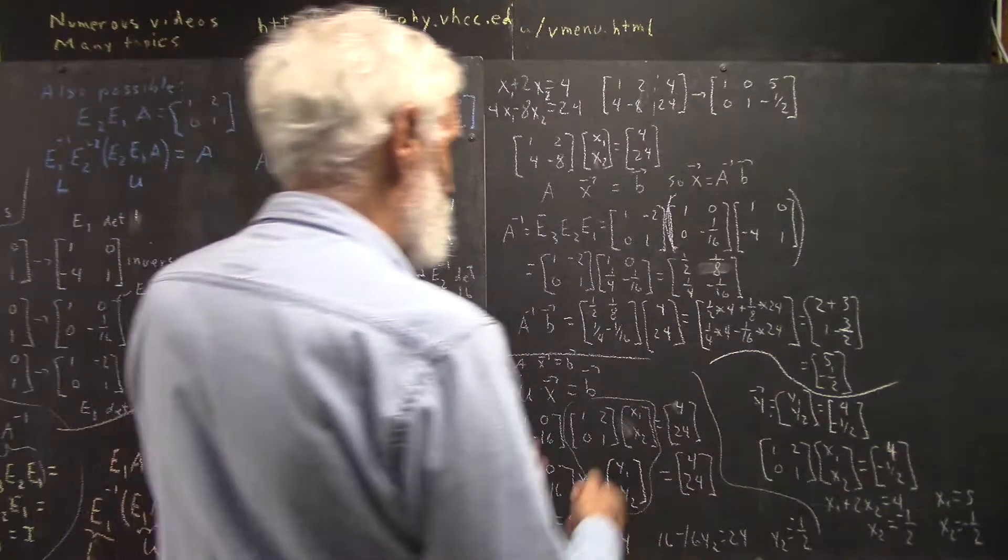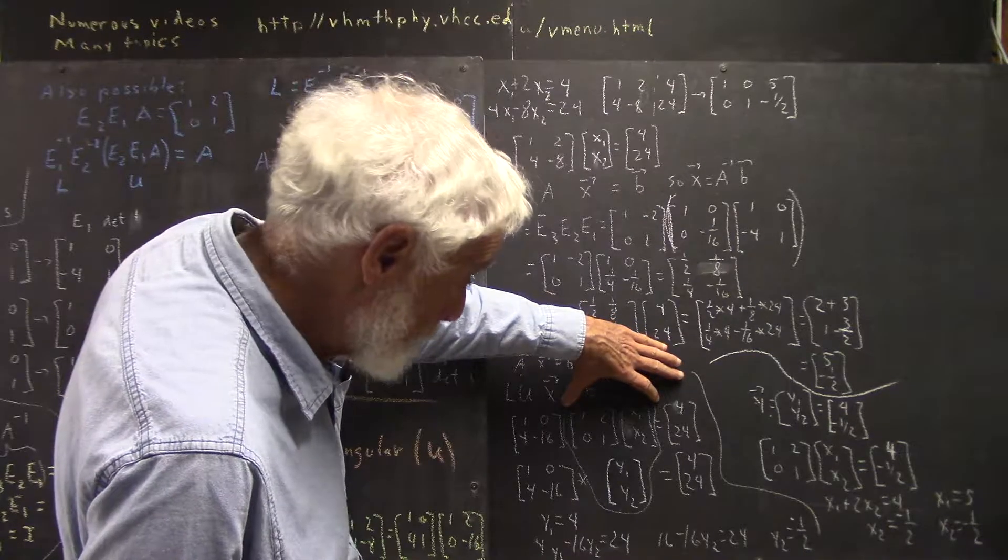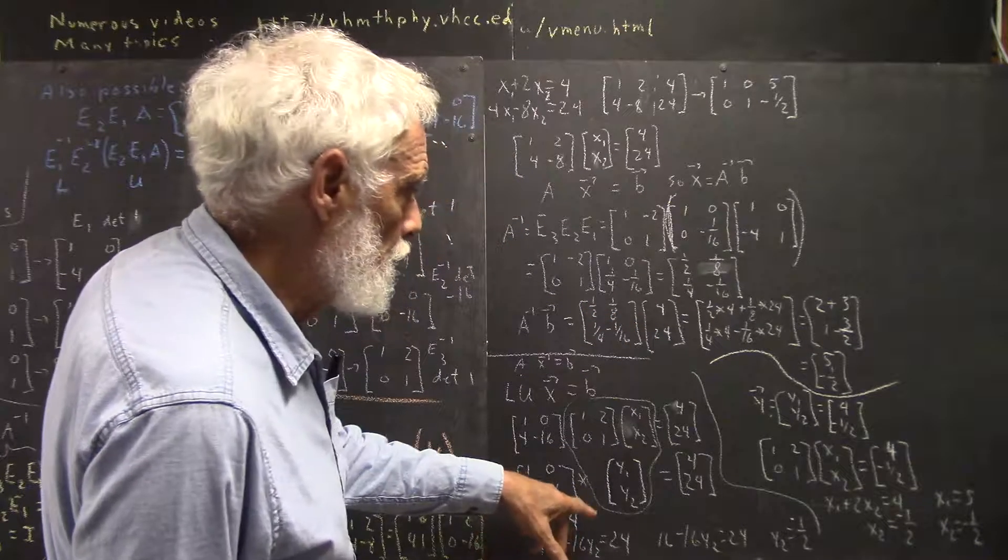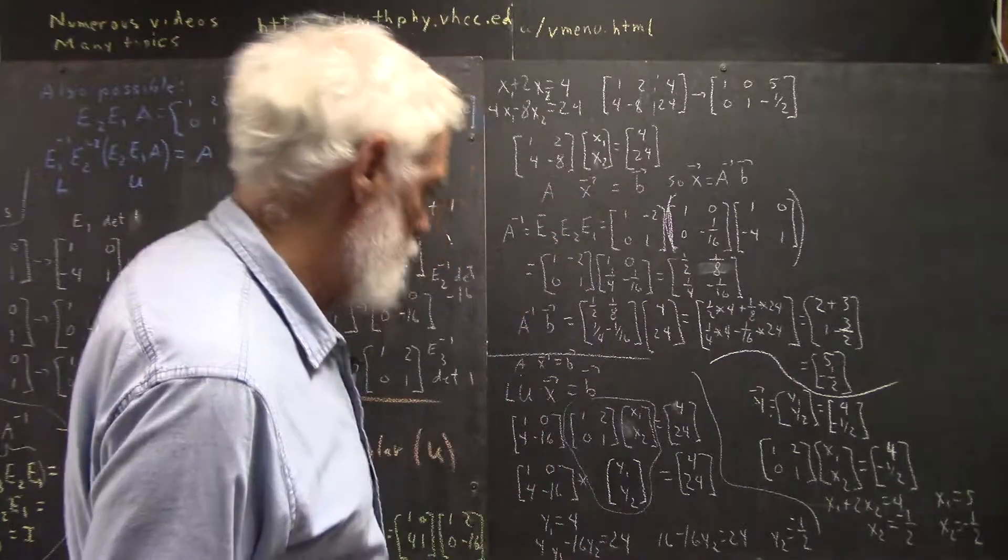We've got to call the something, we've got to give a name to the something, and we don't want it to look like this, although whatever we call it is going to be equal to this. Well, we're just going to call that something our Y vector, Y1, Y2.